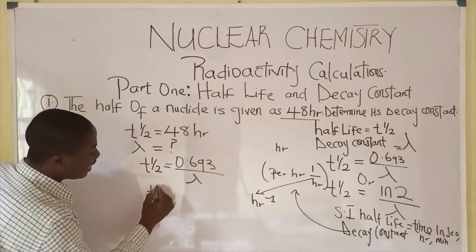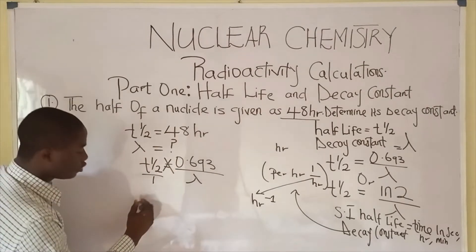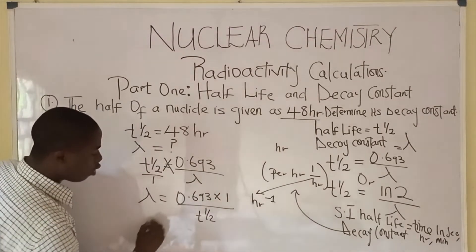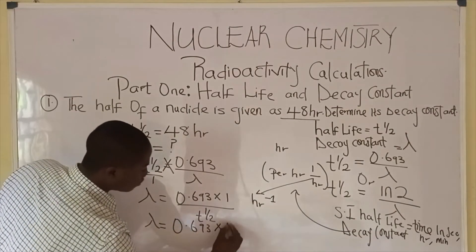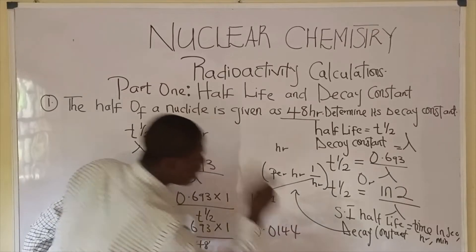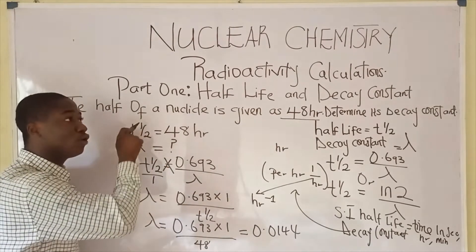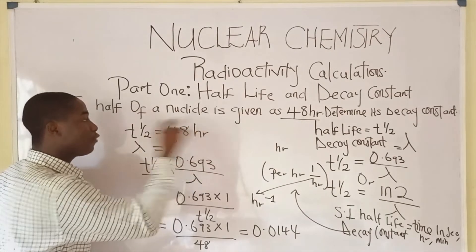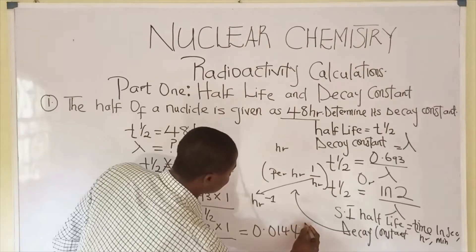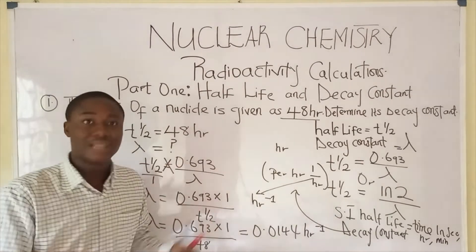Now let's input our parameters. We are asked to get lambda, the decay constant, so we make it the subject of the formula. It becomes 0.693 times 1 over half-life. So the decay constant becomes 0.693 times 1 over 48 hours, which gives us 0.0144. The SI unit for the decay constant is a function of the half-life, and since the half-life is in hours, the answer will be per hours — that is, HR raised to the power of negative 1. This is how to solve problems relating half-life and decay constant.